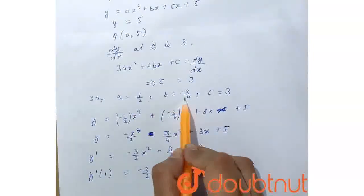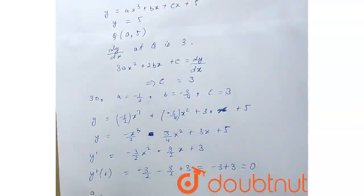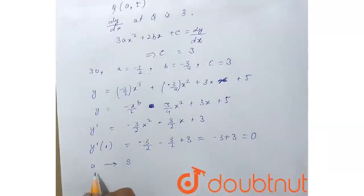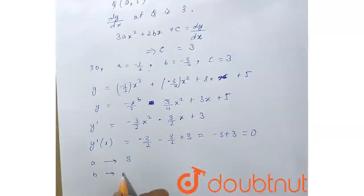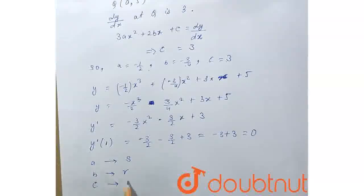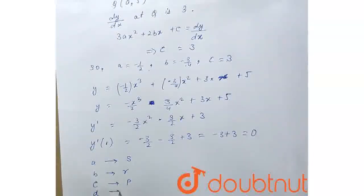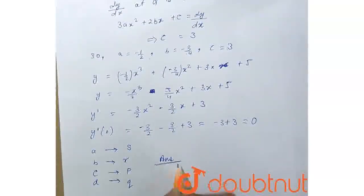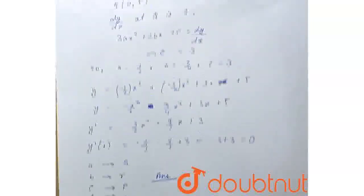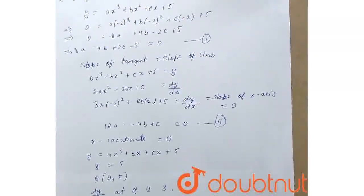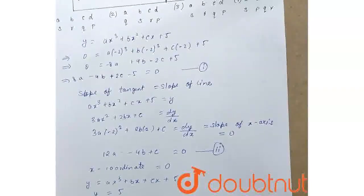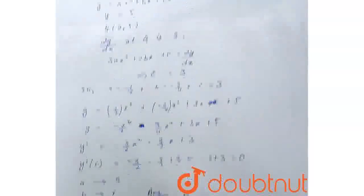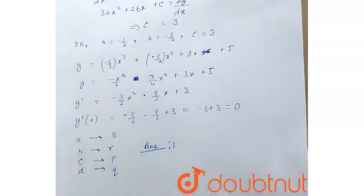So we get a equals minus 1/2, b equals minus 3/4, c equals 3. So a, the value of a is minus 1/2, it's S. b value of b is minus 3/4, R. And c, the value of c is 3, that is P. And d, the value of this is 0, and it is Q. So this is the answer, this is option number one. Hope this is clear, thank you.